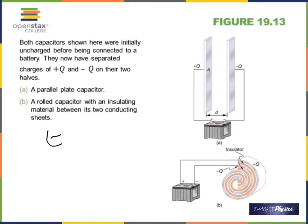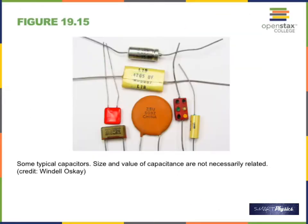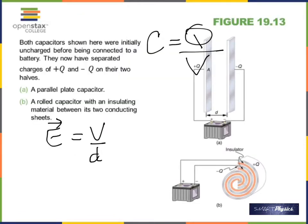There are many shapes for a capacitor — parallel plate, cylindrical (two cylinders inside each other), and spherical (two spheres inside each other). For a parallel plate capacitor, the formula is C = kA/d. Today's lab is on capacitors — you will measure capacitance. You won't just see the capacitor, you'll actually measure it.